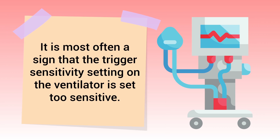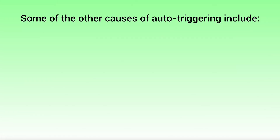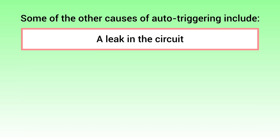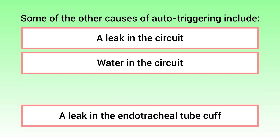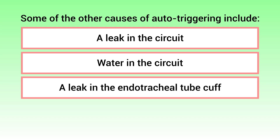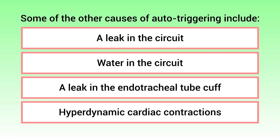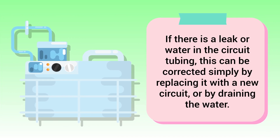When present, auto-triggering is most often a sign that the trigger sensitivity setting on the ventilator is set too sensitive. Some other causes include a leak in the circuit, water in the circuit, a leak in the endotracheal tube cuff, and hyperdynamic cardiac contractions. If there is a leak or water in the circuit tubing, this can be corrected by replacing it with a new circuit or by draining the water.